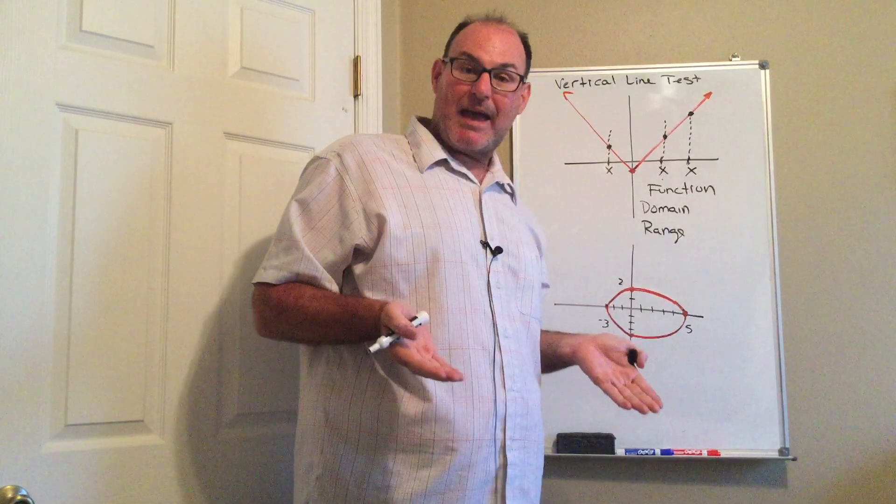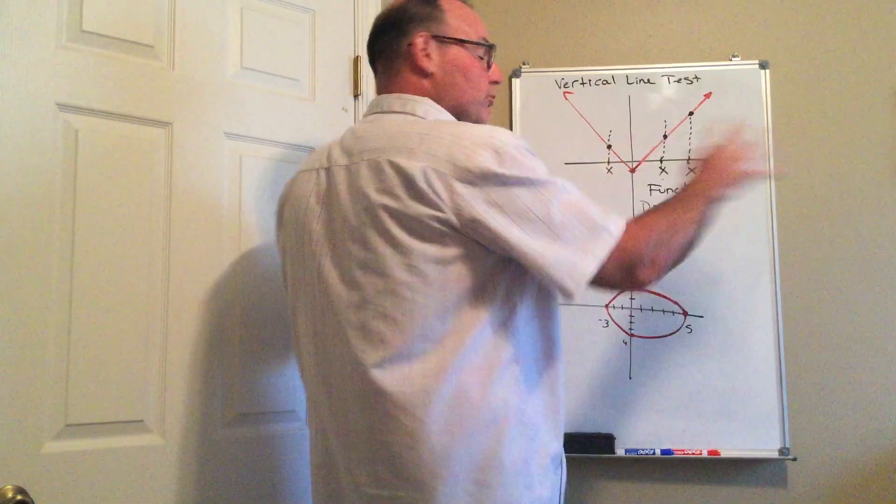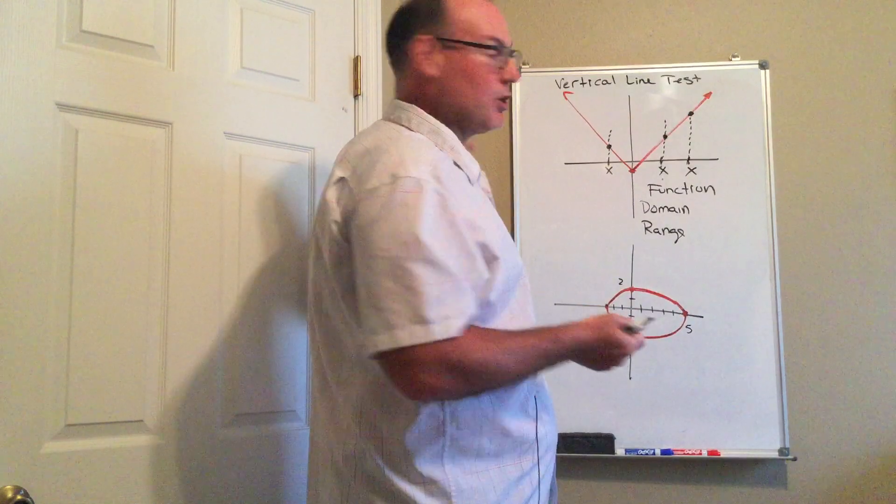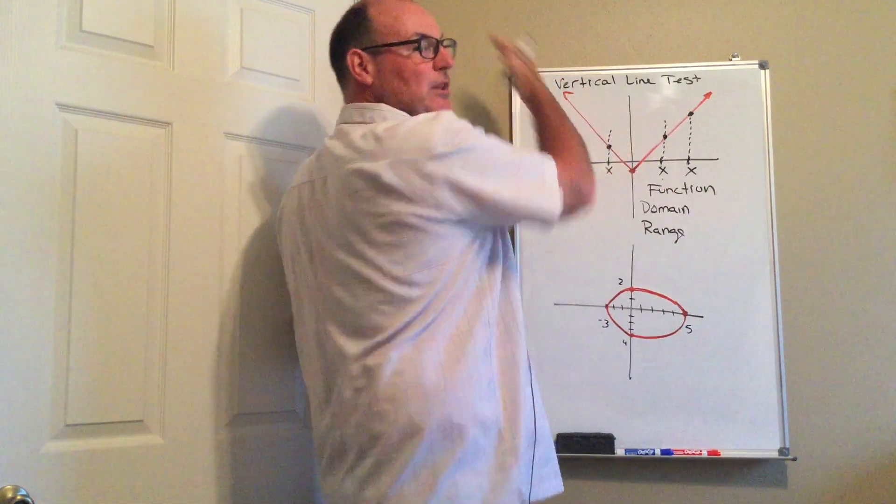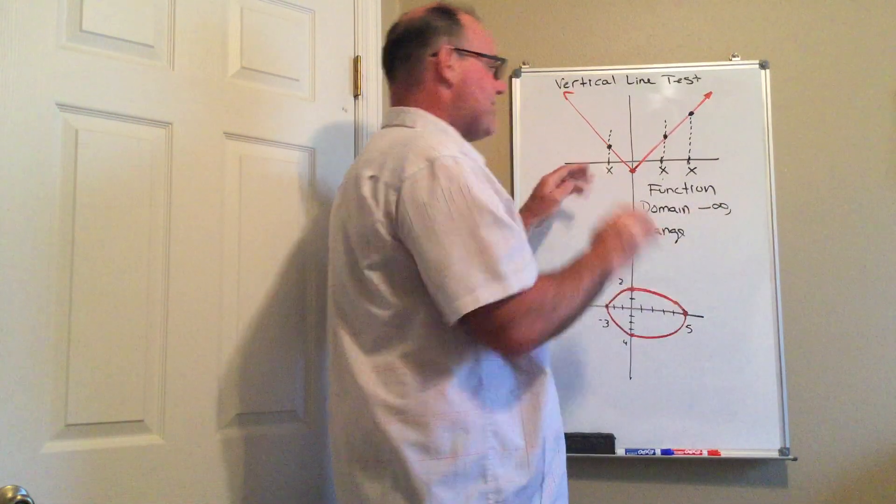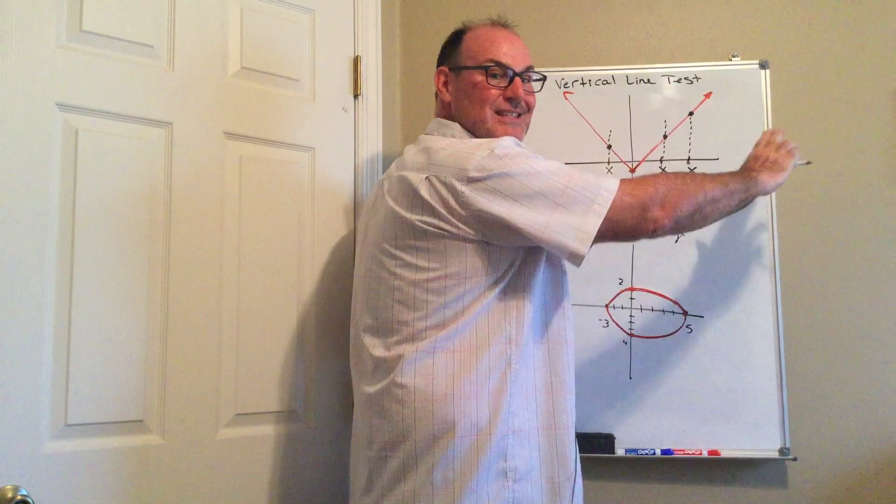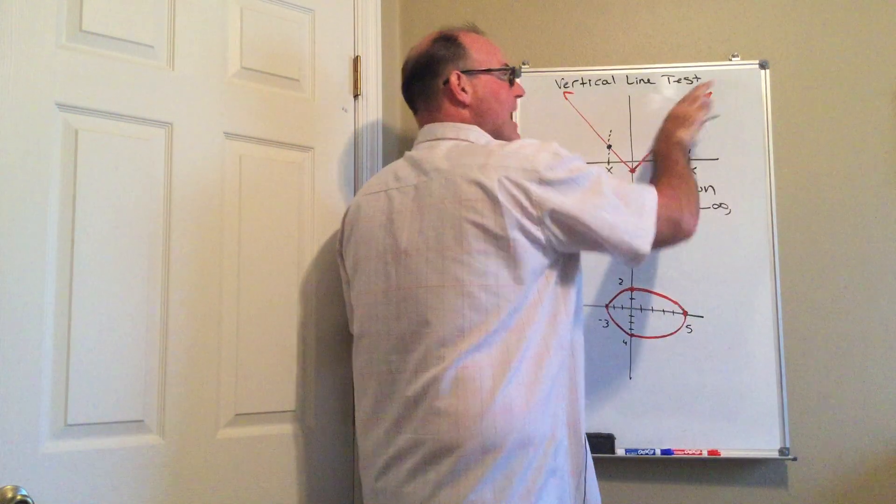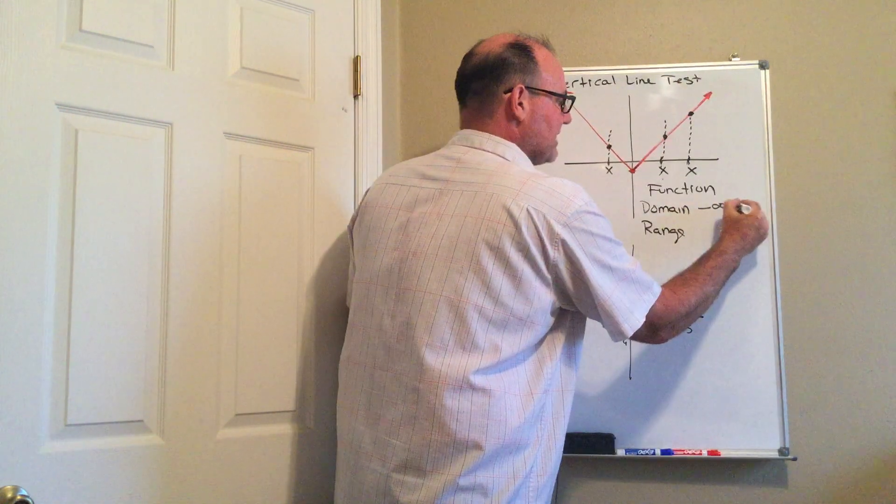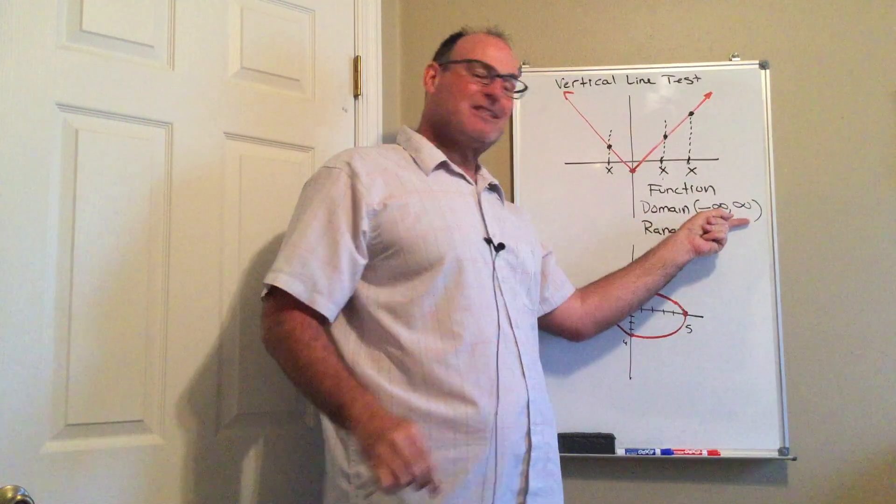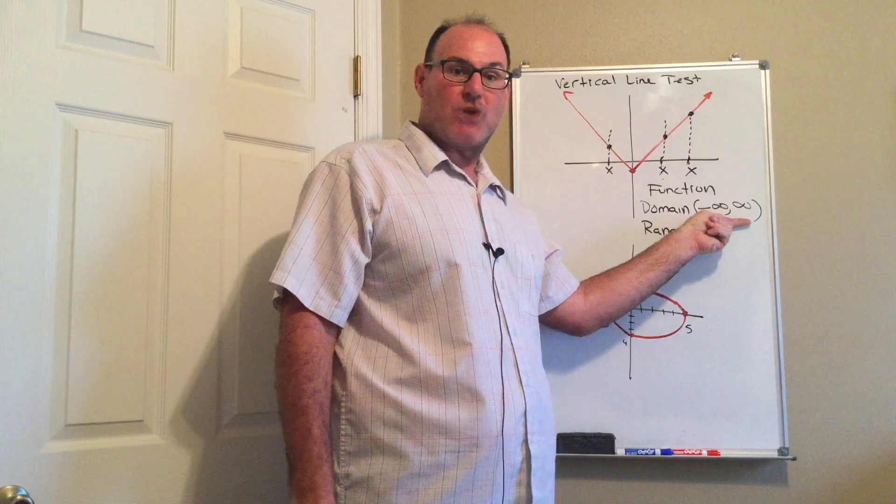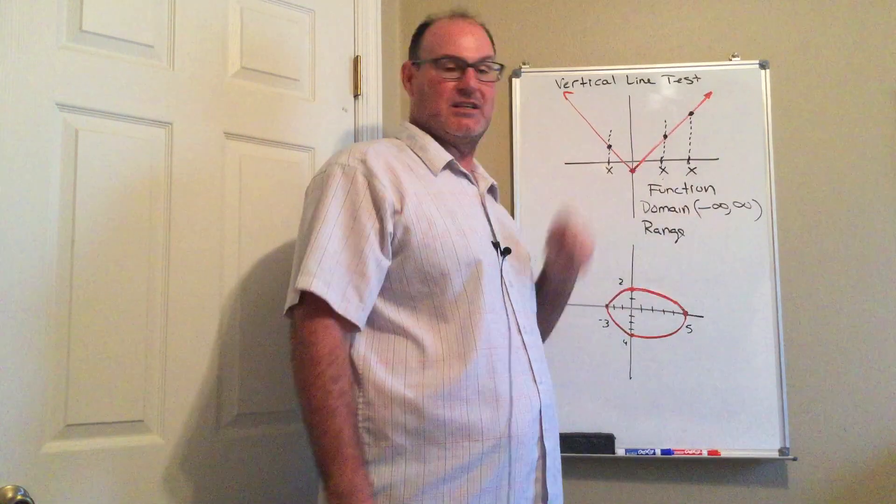So remember domain is my x values, so I look left and right. What's the furthest left this graph is going to go? Well according to the arrow on the end it's going to go left forever and ever, so negative infinity. And then you look to the right, how far right is this graph going to go? Well again the arrow says it's going to keep jetting off into space like that, so it goes to positive infinity. And so what that means is that's the fancy way to write all real numbers. All values are in the domain of this function.